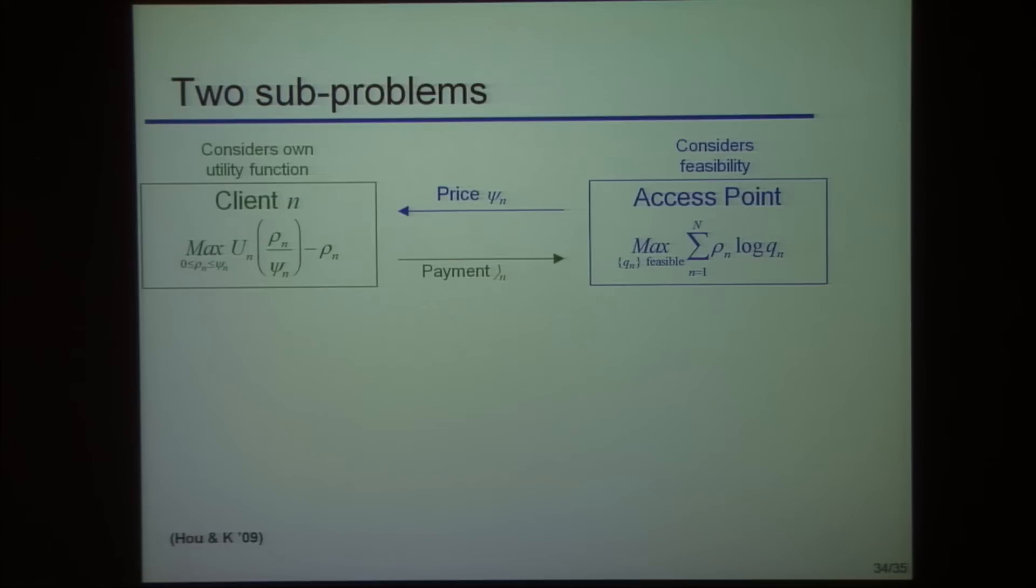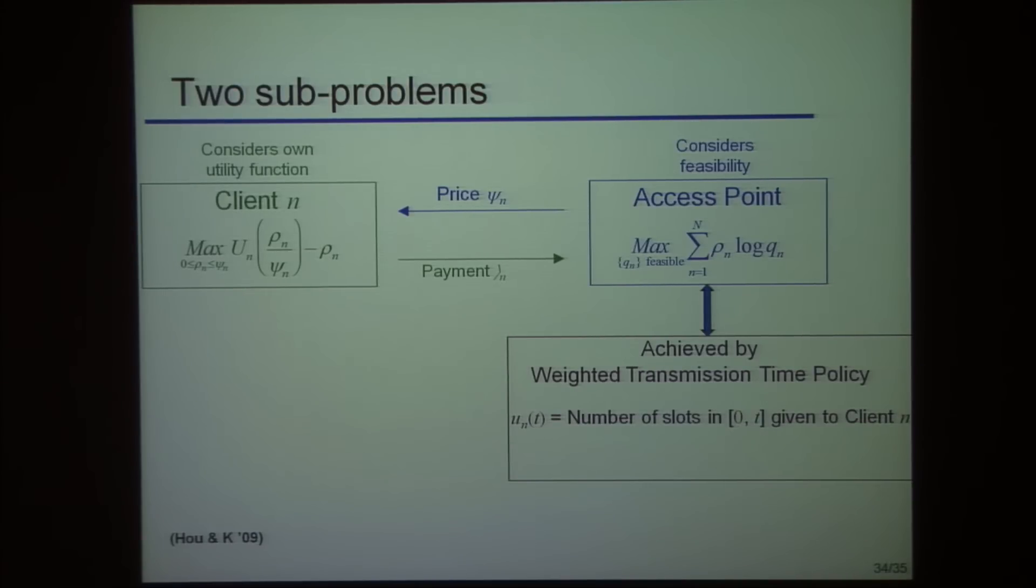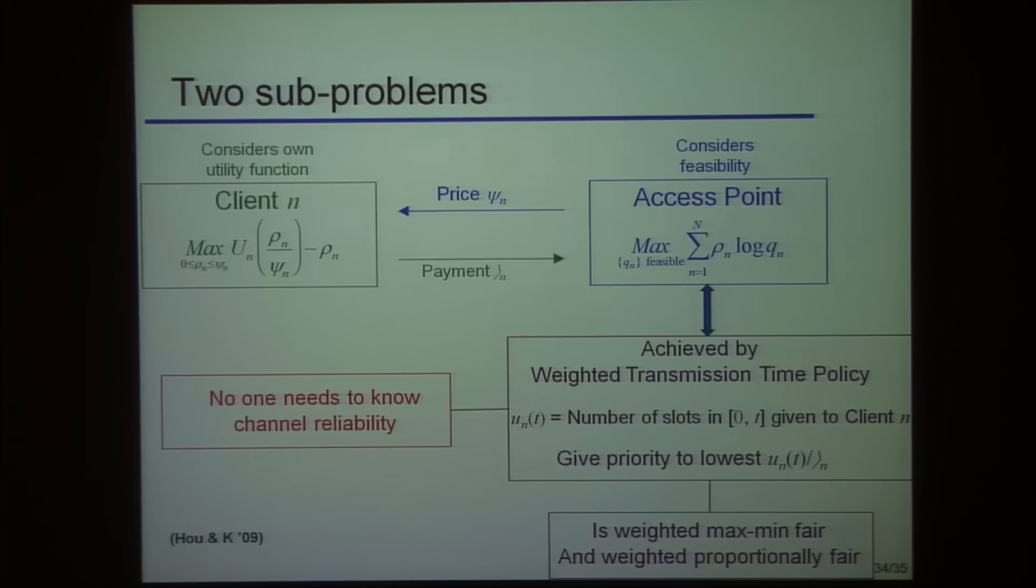The access point has to worry about everybody. It has a proportional fair criterion - maximize that given the payments made by the clients over the set of feasible timely throughputs. That's a very complicated problem with exponential constraints. But what's very interesting is there's a completely trivial policy that solves this. The access point keeps track of how much attention it's given a client empirically, historically, and gives priority according to attention divided by price. It gives you more attention if you've been underserved or if you've paid a lot. That policy maximizes that complicated objective function. What's also interesting is nobody needs to know channel reliability - it gets completely priced out. You don't need to do channel characterization.